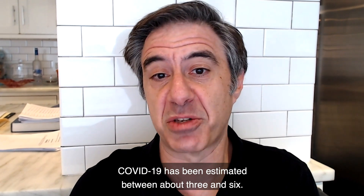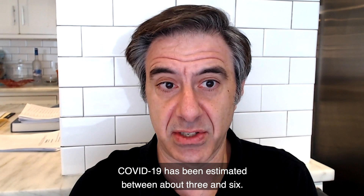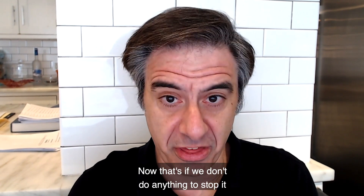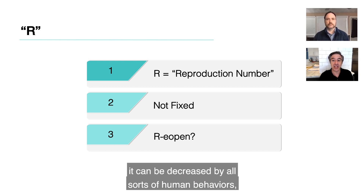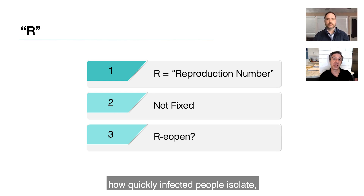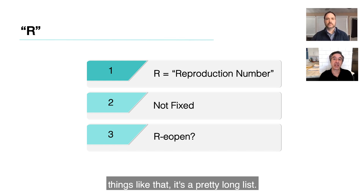COVID-19 has been estimated between about three and six — and that's if we don't do anything to stop it. Whatever a virus's inherent R might be, it can be decreased by all sorts of human behaviors: how quickly infected people isolate, how often they wear masks, maybe develop immunity, and things like that. It's a pretty long list.